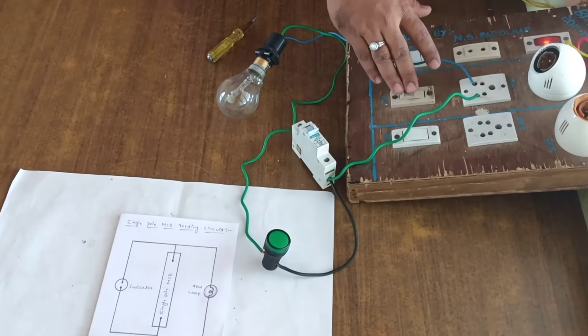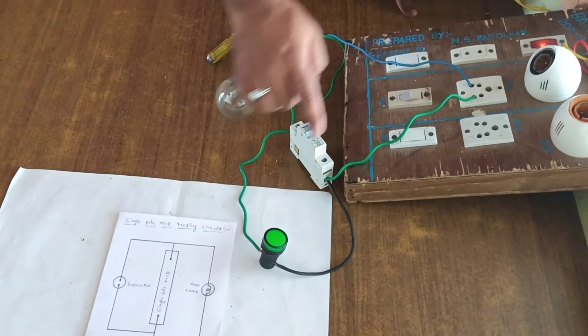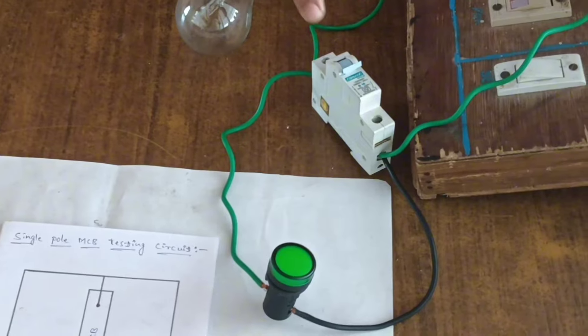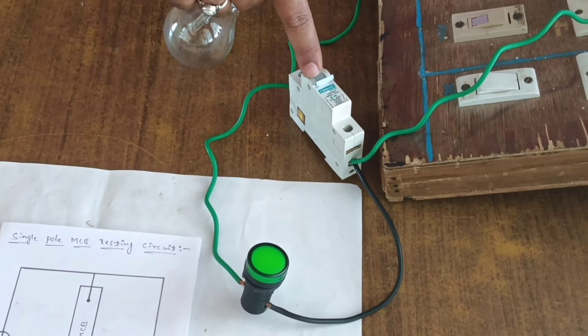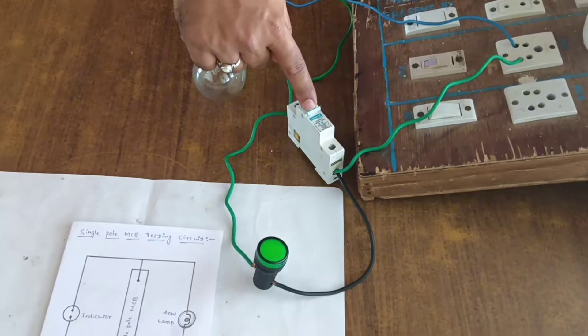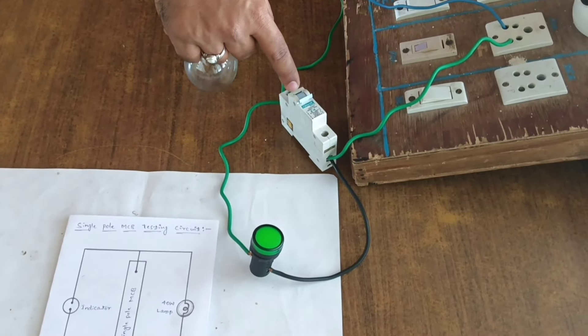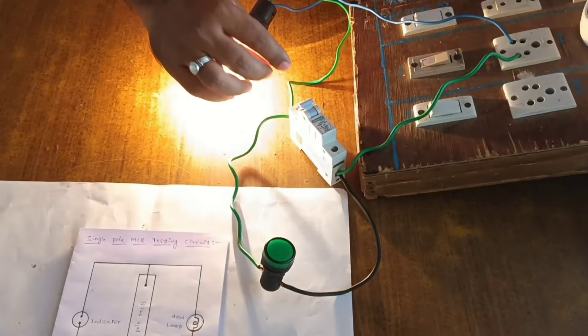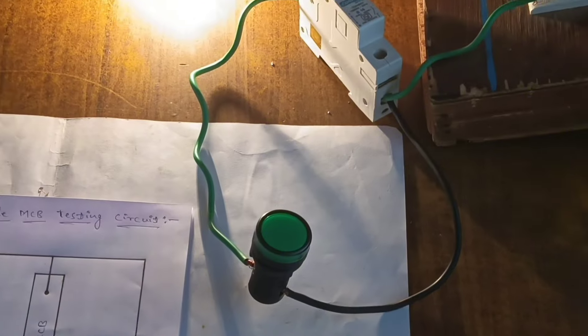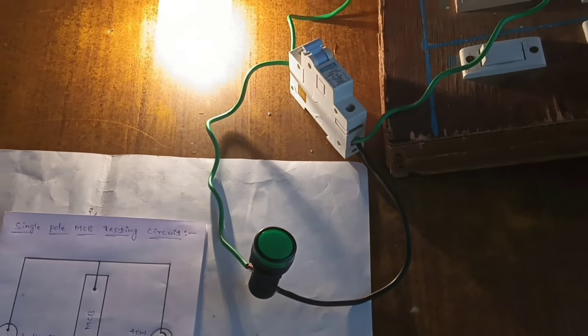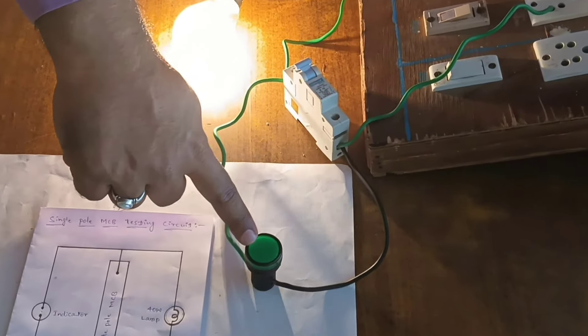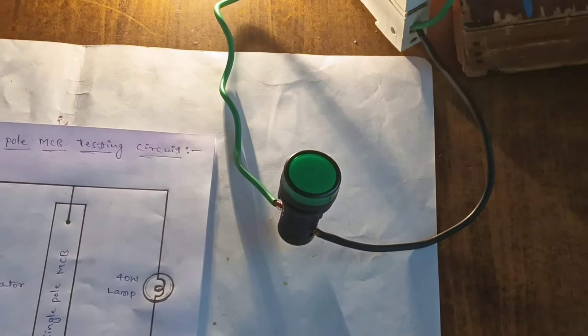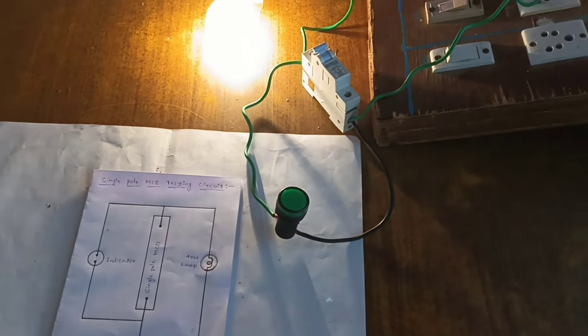When we make switch on, see here, it is on. Now the MCB is in lower position, means it is off. When we make it on, this lamp will glow. Let's see. When we make it on, lamp will glow. Lamp is glowing now and this indicator is off and lamp is on.